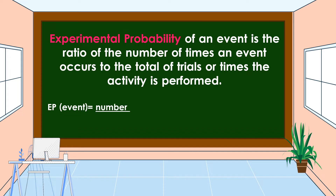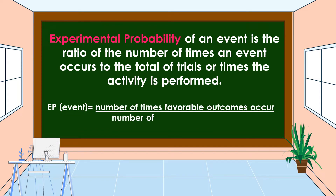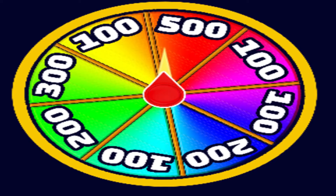EP, or experimental probability of an event, is equal to the number of times favorable outcomes occur over the number of trials in the experiment. Let's do an experimental probability using a spinner.